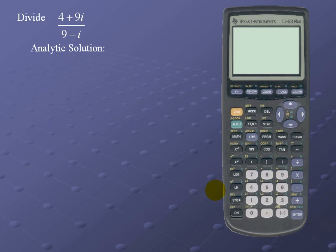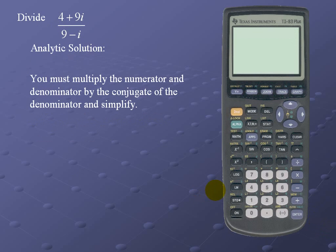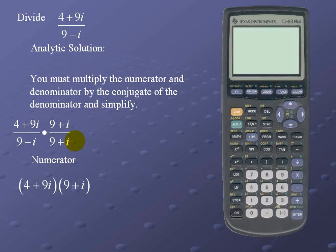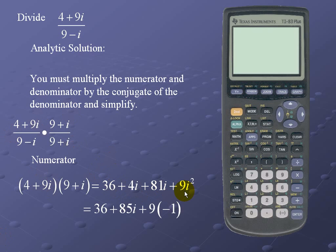Let's divide (4 + 9i) divided by (9 - i). Here's the analytic solution. We must multiply the numerator and denominator by the conjugate of the denominator and then simplify. The denominator is (9 - i), so the conjugate is (9 + i). We multiply numerator and denominator by (9 + i). Using FOIL on the numerator: first terms give 36, outermost term is 4i, innermost term is 81i, and the last term is 9i². Simplifying and using the fact that i² = -1, the numerator simplifies to 27 + 85i.